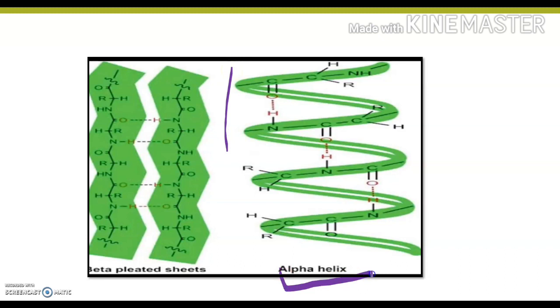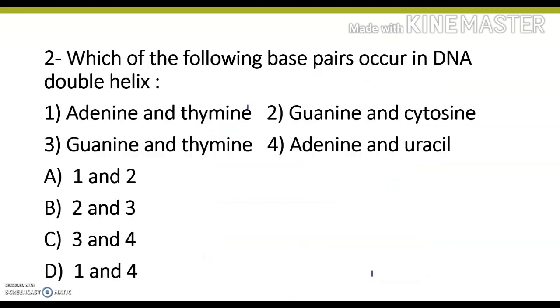Now moving on to the next question: which of the following base pairs occur in DNA double helix? The pairs are adenine-thymine, guanine-cytosine, guanine-thymine, adenine-uracil. In DNA, adenine is attached with thymine through a double hydrogen bond.